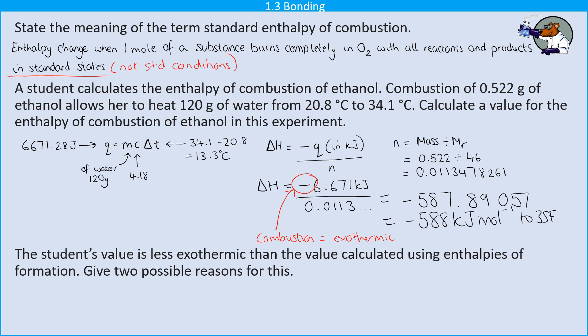Finally, I need to give two reasons why this experimental value is going to be less exothermic. In other words, it has a smaller magnitude compared to a value that has been calculated using enthalpies of formation. So the first one is that we're going to have heat losses to the surroundings. So this is why when you do an experiment like this, you're going to try and insulate it. You might include a lid. You might wrap insulation around it.